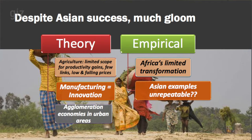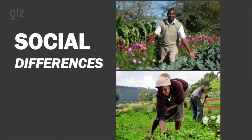And then, astonishingly, there's literature that says Asia may have been successful, but Asia was special — Asia had its special moment in history and Africa can't have that anymore. I really wonder about that particular argument. I also want to look at the social differences and what they may mean through development, transformation, and transitions.